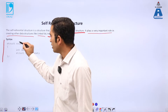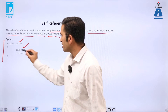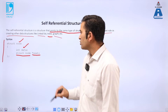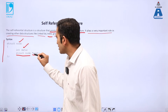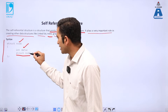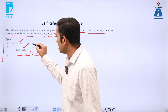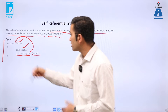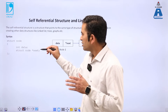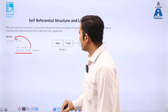This is the syntax of a self-referential structure: struct node. Here, node is the name of the structure. Inside it, int data — data is a member of that structure node. And struct node star next — star next is a pointer type variable, and node is the structure. Since this structure node refers to itself, this is called a self-referential structure.